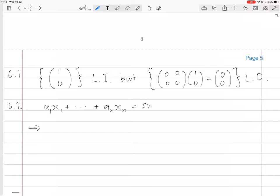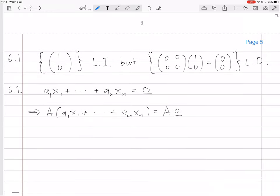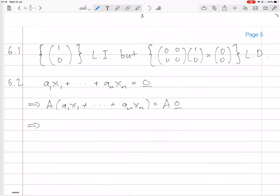Now that implies that a of both sides, that's a zero vector, is equal to a times the zero vector. But that's the same as, because a is linear, so it respects, preserves vector addition.